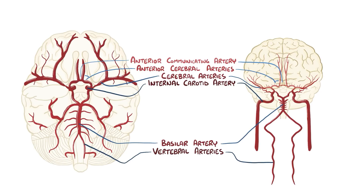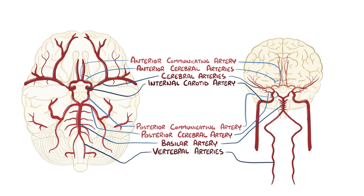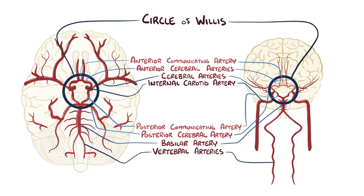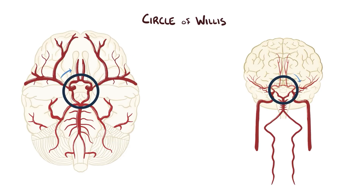Meanwhile, the vertebral and basilar arteries give off branches to supply the cerebellum and the brain stem. In addition, the basilar artery divides to become the right and left posterior cerebral arteries, which mainly serve the occipital lobe, some of the temporal lobe, and the thalamus. Finally, the internal carotid arteries each give off a branch called the posterior communicating artery, which attaches to the posterior arteries on each side. Together, the main arteries and the communicating arteries complete what is called the circle of Willis — a ring where blood can circulate from one side to the other in case of a blockage.